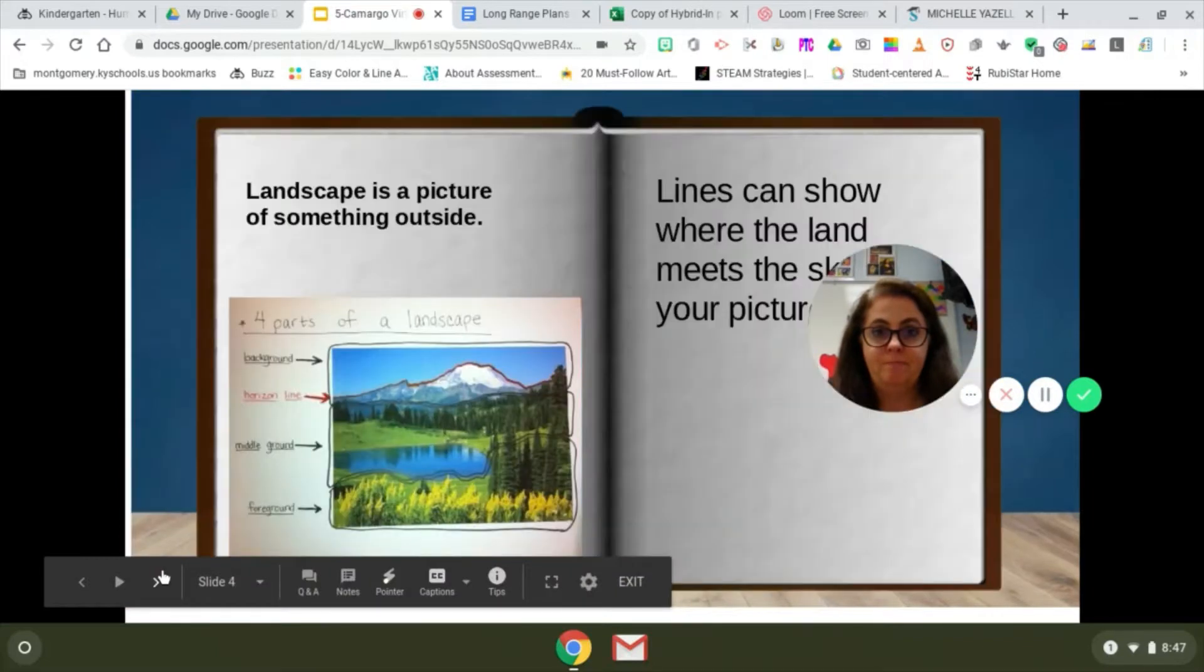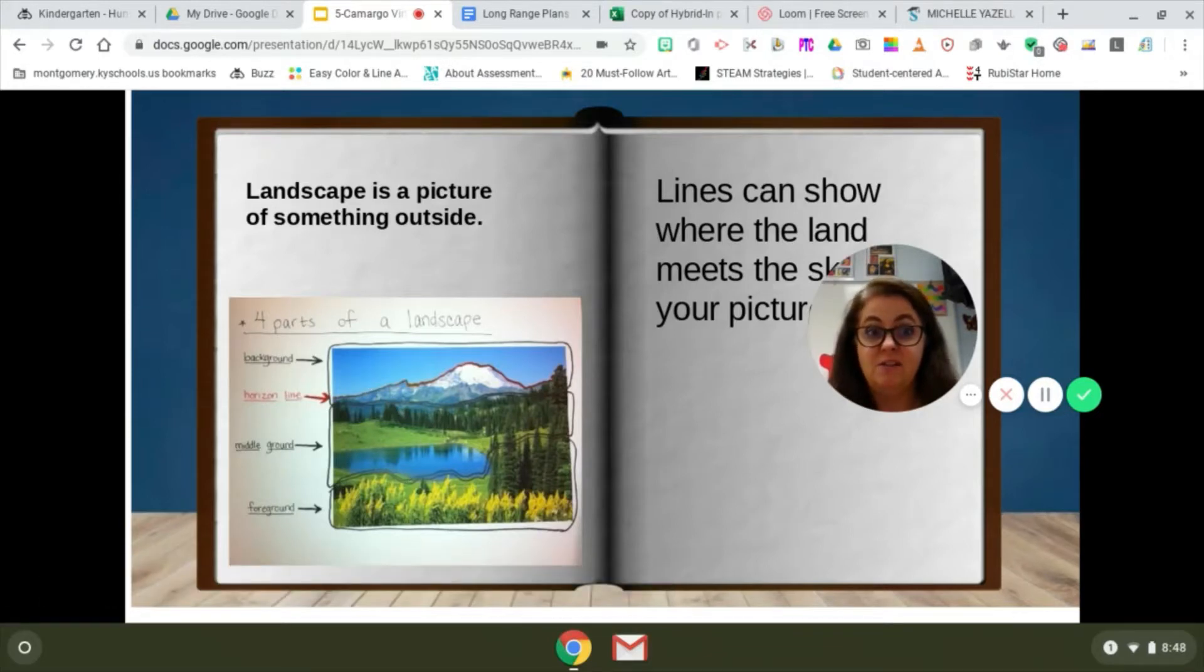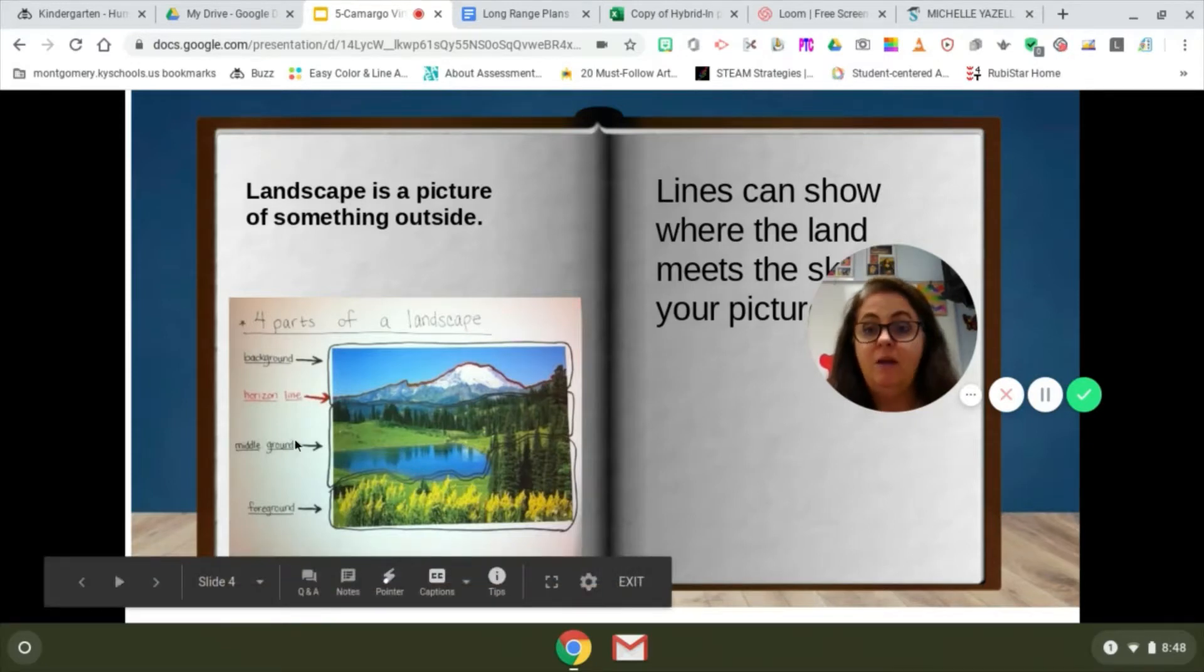A landscape is a picture of something outside. You see this picture right here, it's divided up into areas because there's a background in the landscape. That means that's the sky. The things that are furthest away are in the background. There's a horizon line, the line that separates the sky from the ground. Then we have a middle ground and a foreground. There's some water in the middle ground and grass in the foreground. We're going to use different kinds of lines today to draw this landscape.